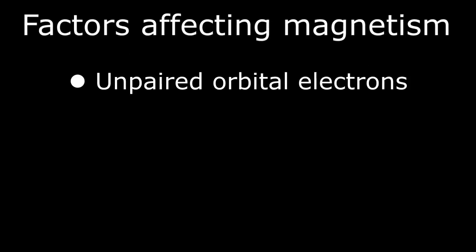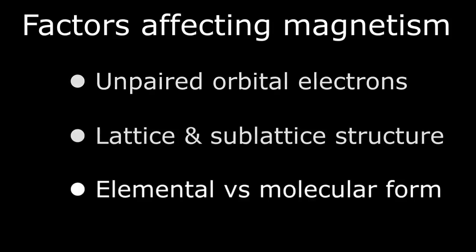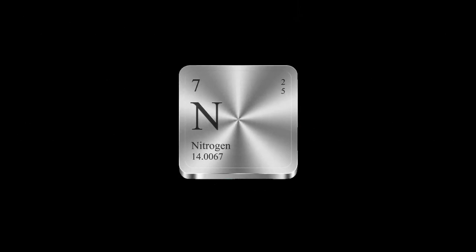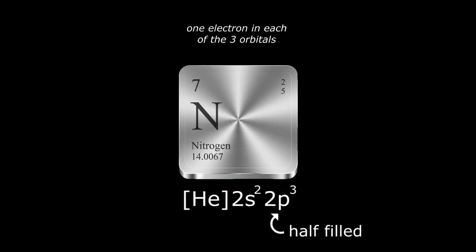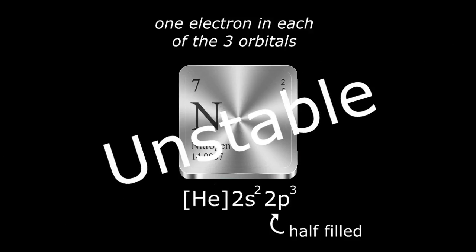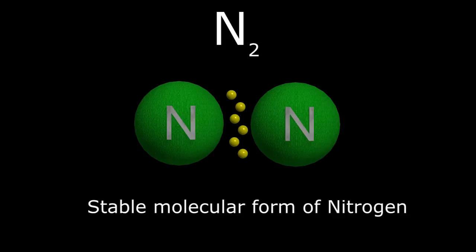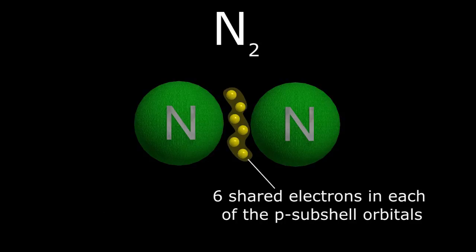Now, we don't want you to be confused if you go to the periodic table with all this info, calculate the electron configuration, and find that some of your elements are actually diamagnetic instead of the predicted para- or ferromagnetic. As we mentioned earlier, factors other than paired or unpaired orbital electrons can affect an element's ultimate magnetic properties — for instance, the element's crystalline lattice and sub-lattice structure, and whether the atom exists in its elemental or molecular form. Let's use nitrogen as an example. With an electron configuration of [He] 2S², 2P³, the P subshell is exactly half-filled with one electron in each of the three orbits. This should make it strongly paramagnetic — but it's not. The reason is that elemental nitrogen is extremely unstable. The nitrogen gas that makes up most of our atmosphere is actually N₂. With two nitrogen atoms chemically bonded together, the molecular form is now very stable with all its orbitals occupied, and therefore is diamagnetic.